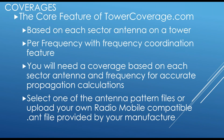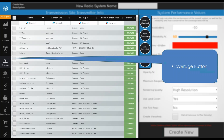Next, we have coverages — the core feature of TowerCoverage.com. Coverage is typically based on each sector antenna on a tower per frequency. So if you have 2.4 GHz with three sectors and four or five 5 GHz sectors, that's seven coverages to populate. You can create coverage based on each sector antenna and frequency for active propagation calculations. When you click the coverage button you get all your coverages with the ability to search by name, center site, antenna type, or exact center frequency.